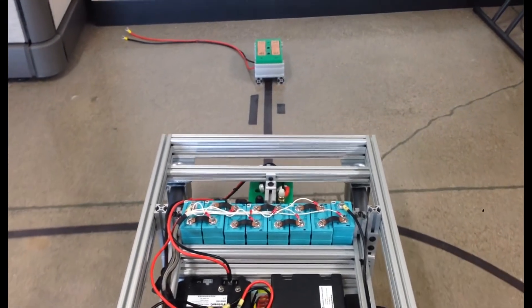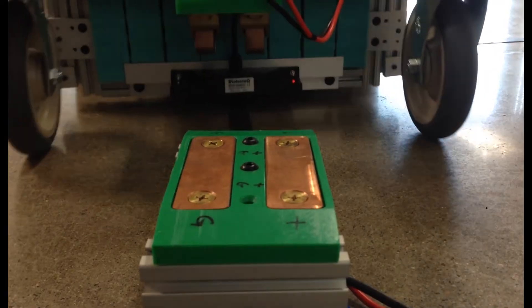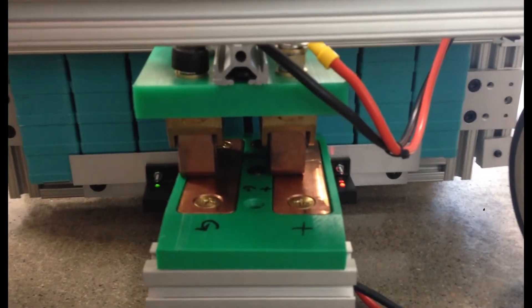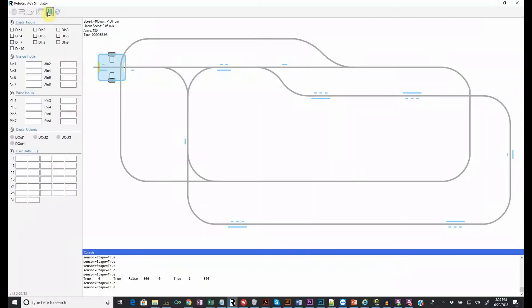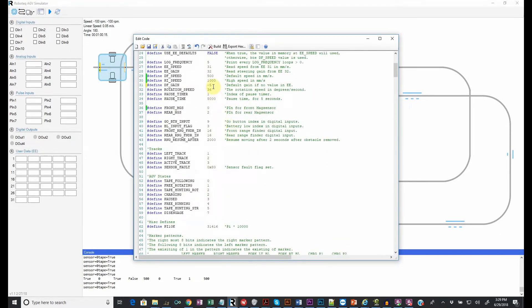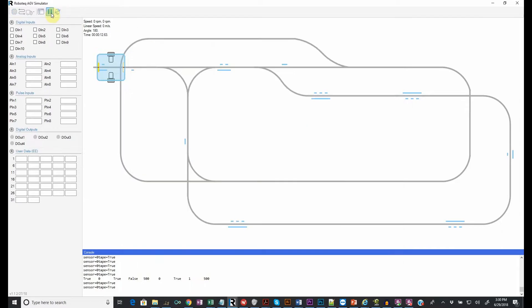The AGV stops at the pause marker and makes contact with the charger pads. After charging, the AGV will need to perform an undocking maneuver. RoboteQ offers a simulator to simplify the programming and testing of such motions.